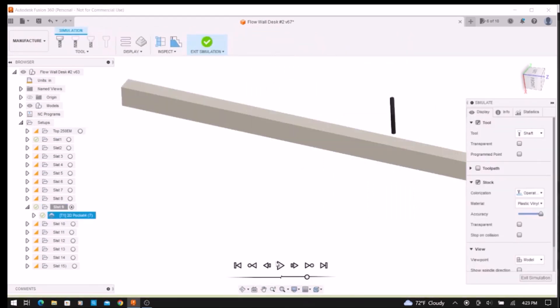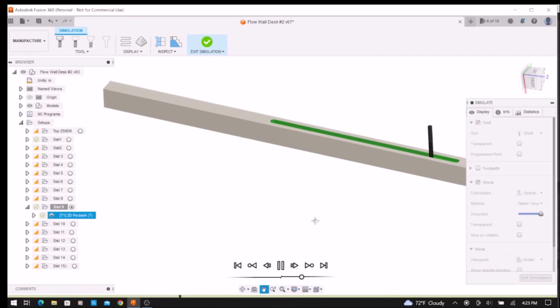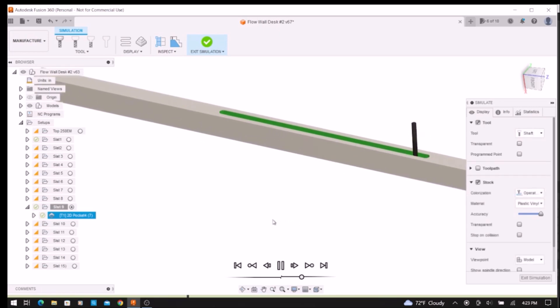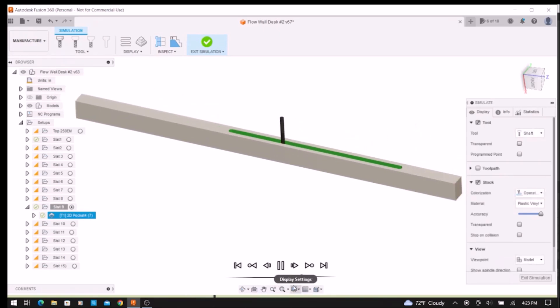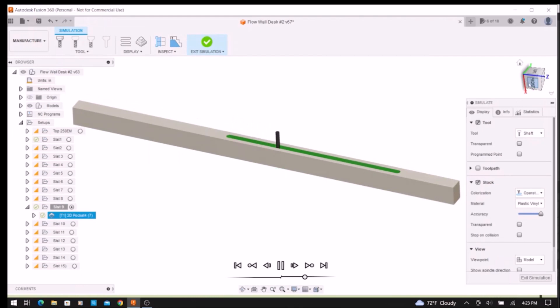And here is a simulation of a representative toolpath for a slot in a slat. A separate toolpath had to be created and especially designed for each of the 15 slats.